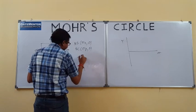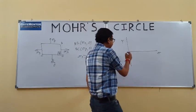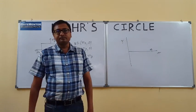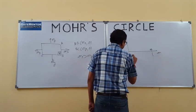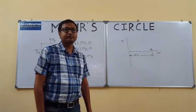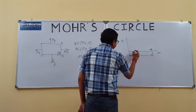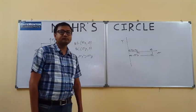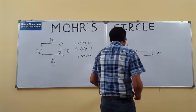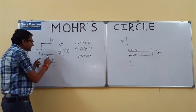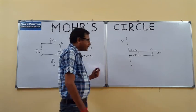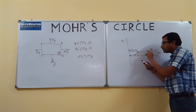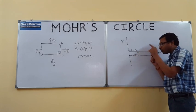I assume that sigma x is greater than sigma y. Plane AB carries normal stress sigma x, and plane BC carries normal stress sigma y. Since they are 90 degrees apart in reality, they will be 180 degrees apart on the Mohr's circle — meaning AB and BC are two diametric points.